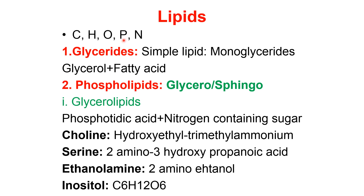Glycerides are made up of glycerol plus fatty acids. A neutral fat is a triglyceride — three fatty acids attached to glycerol. These triglycerides are fats that help in insulation and protection and are a source of energy.